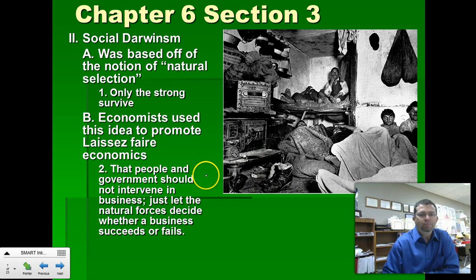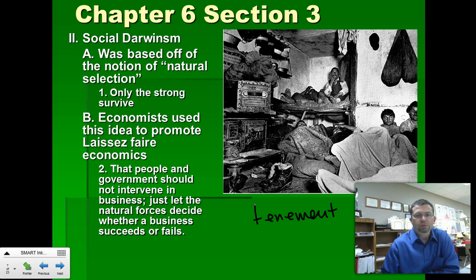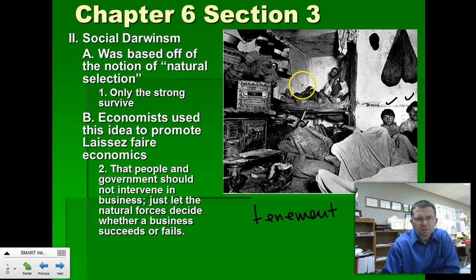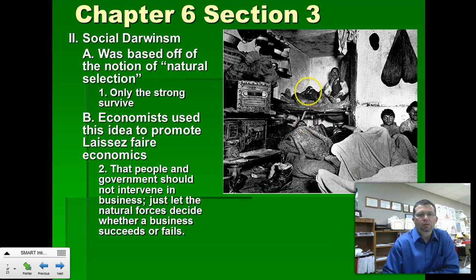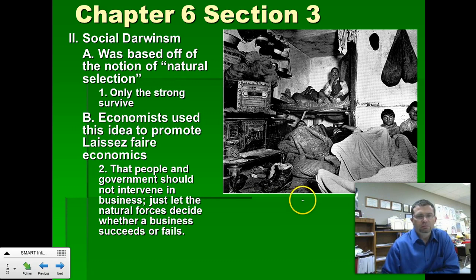Here you see a picture of a typical tenement house — it can be in New York City, Philadelphia, New Jersey, wherever. You have a typical family of six living in an area about a quarter of the size of our classroom. Very typical for tenements at the time. These are the people who Carnegie believed weren't poor because of anything they did in life — they were poor, and that's okay, because you have to have poor people to work and rich people to run the business.